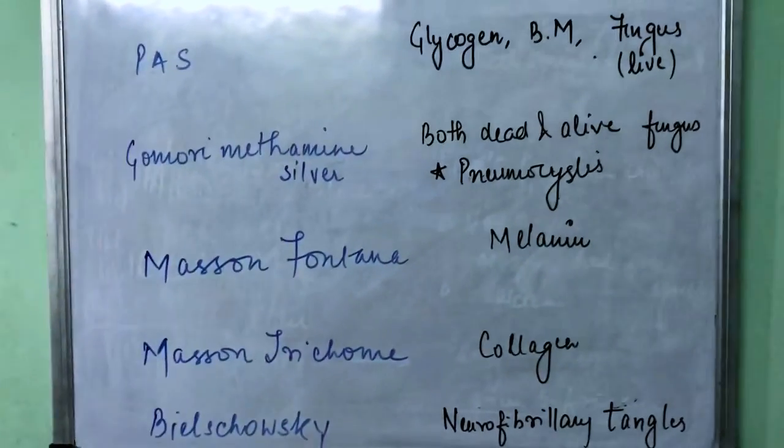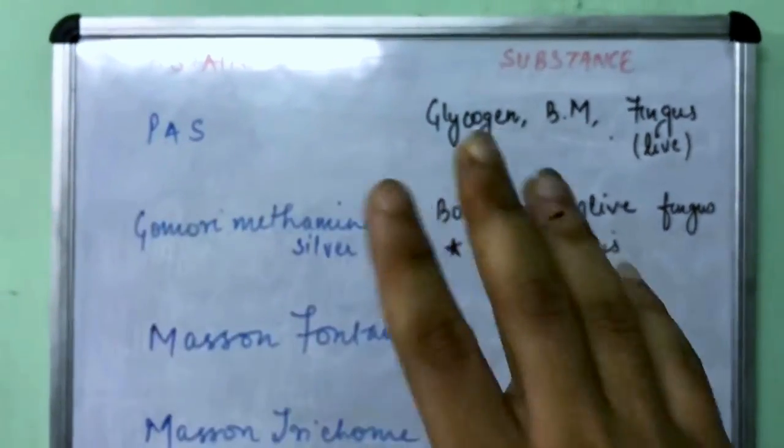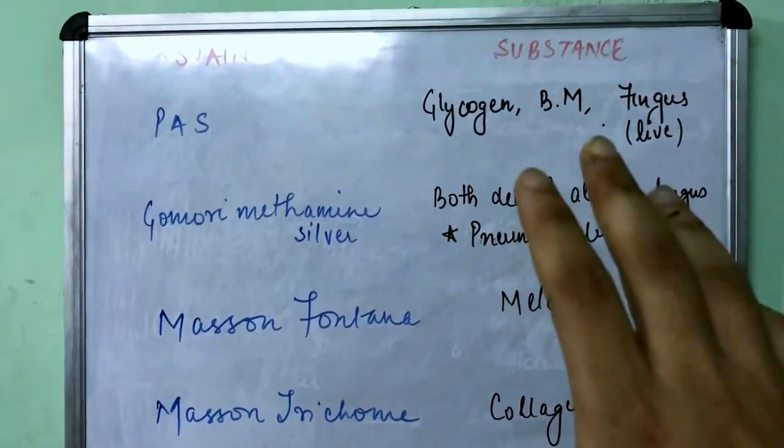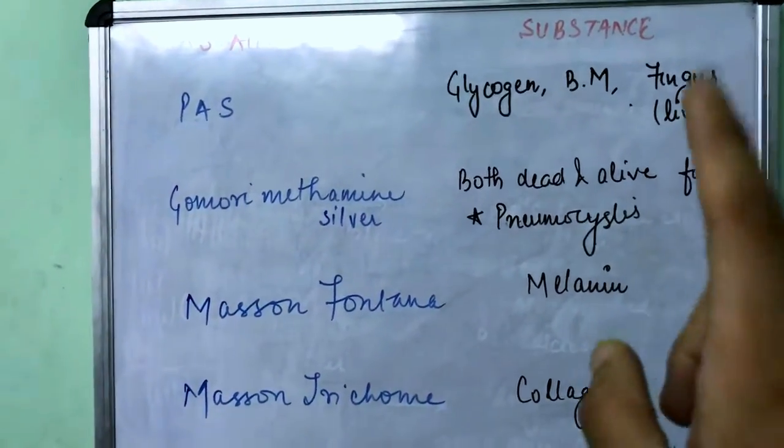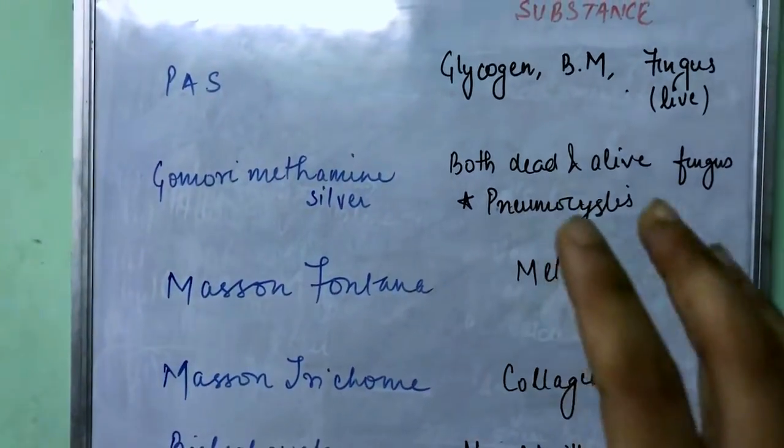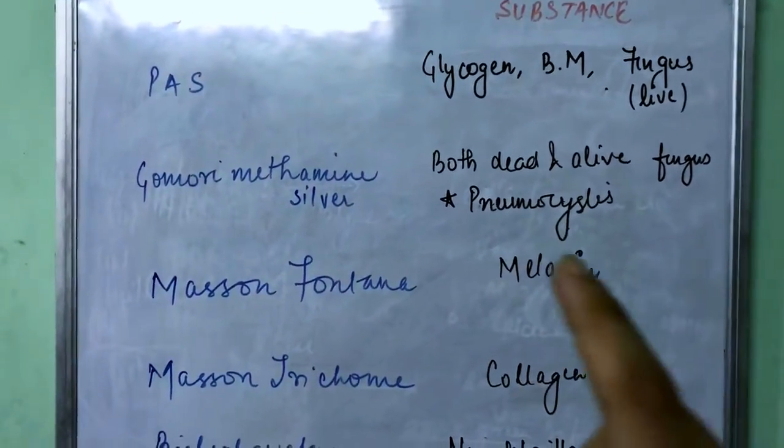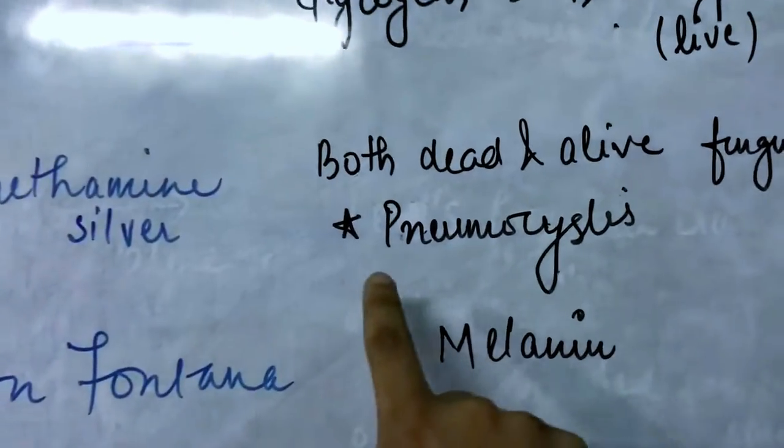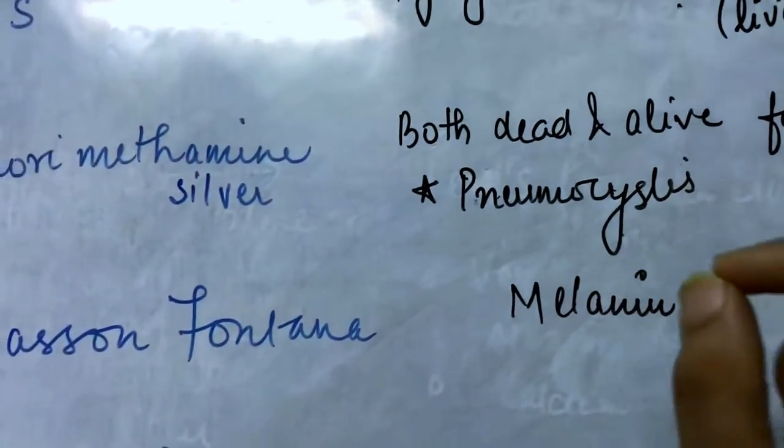Other important stains that can easily be asked are PAS. PAS is used to stain glycogen, the basement membrane, and alive fungus. Contrast this with Gomori methenamine stain, which is considered the best stain for fungus as it is used to stain both dead and alive fungus. And especially it has been asked for Pneumocystis, because Pneumocystis cysts give a characteristic appearance of crushed ping-pong ball with Gomori methenamine silver stain.